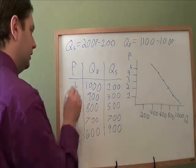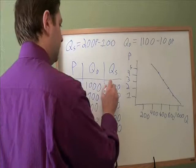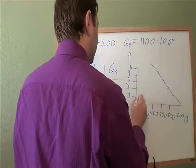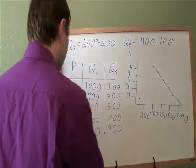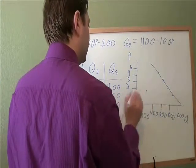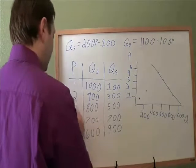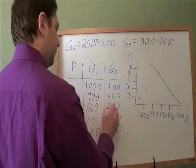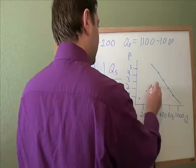Supply, very similar. At $1, the quantity supplied is 100. That will be about there. At $2, it is $300. $2, $300 is between $200 and $400. It goes right there. At $3, we've got $500. About there.